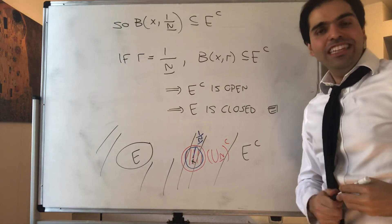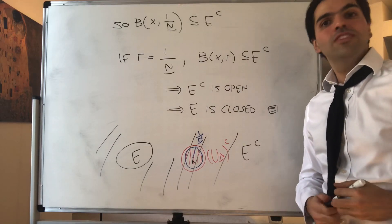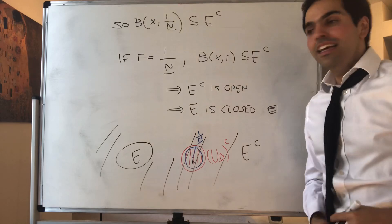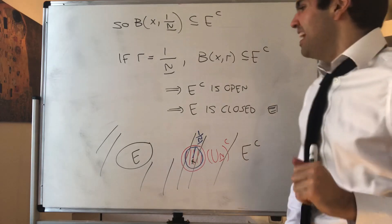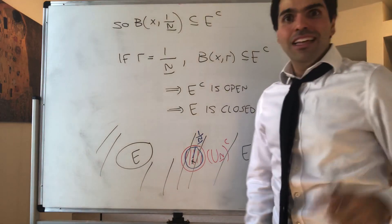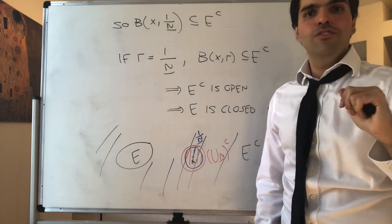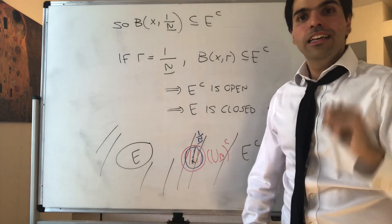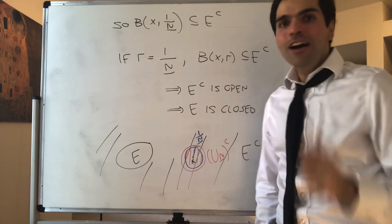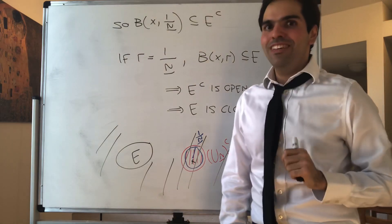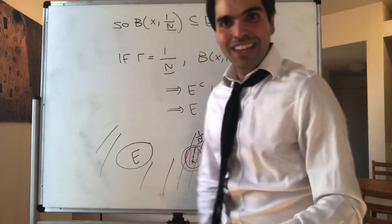Hence, we've seen that if a set is compact, it must be closed and bounded. This raises a question: if E is closed and bounded, does E have to be compact? In general, it turns out the answer is no, but in the next video we'll see more. Alright, thank you very much.